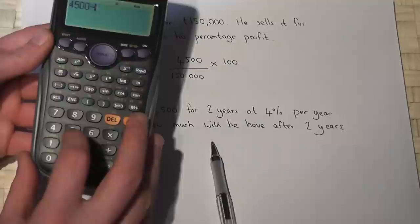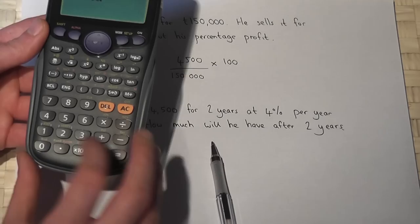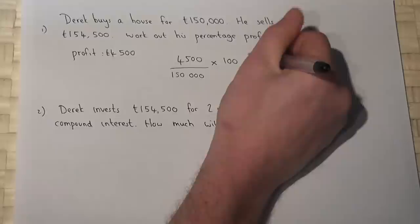So on the calculator, £4,500 divided by £150,000, press enter, times by 100, and the answer is 3%.